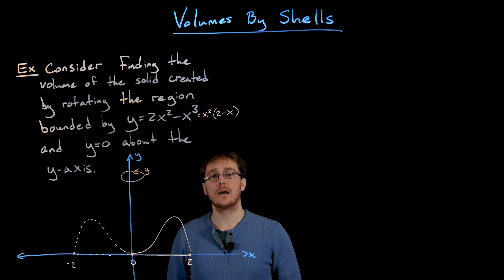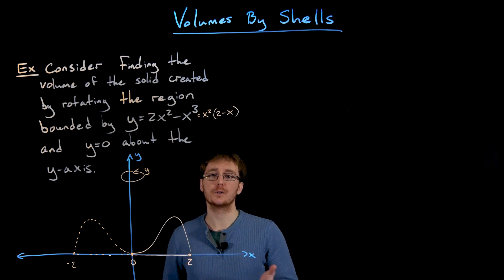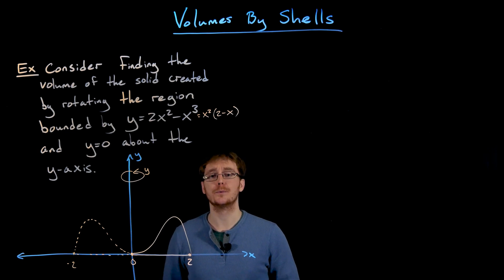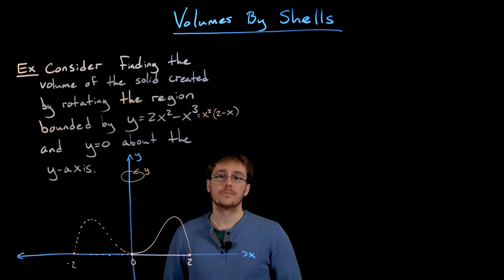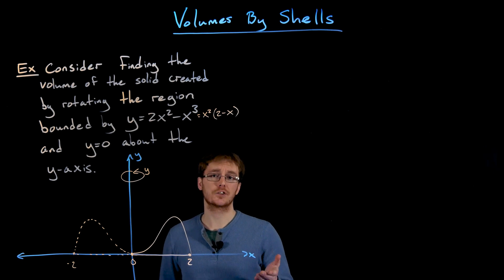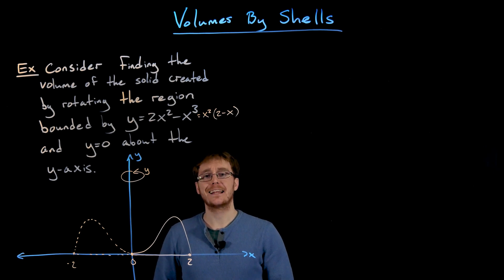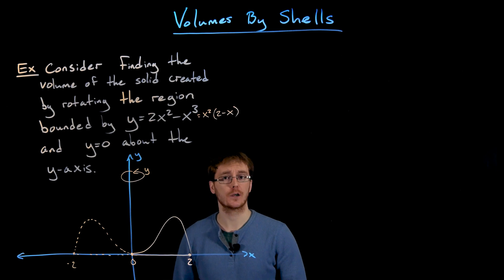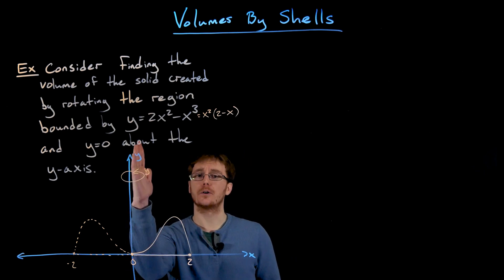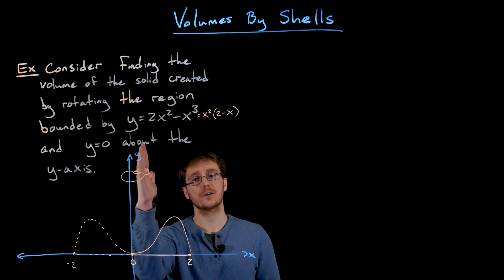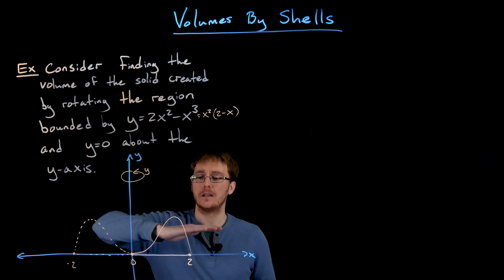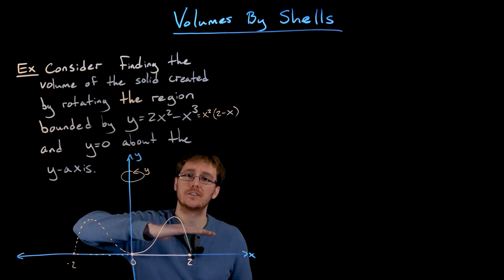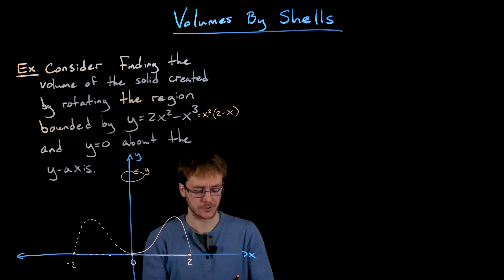Before discussing the shell method, let's try to approach this with our previous disk and washer method to see why that method is going to be really difficult here. When using the disk or washer method, we always make the slice perpendicular to the axis of rotation. Since our axis of rotation is the y-axis, a vertical axis, we want to take horizontal slices.